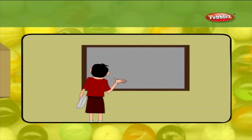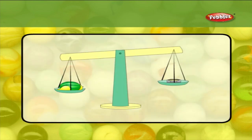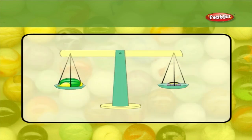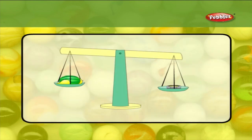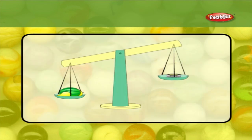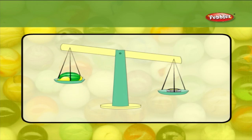A blackboard can be measured with the help of a cubit. The board measures nearly two cubit measures. Some things like fruits and vegetables are measured by kilograms.